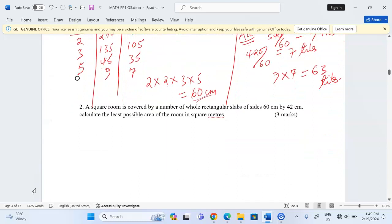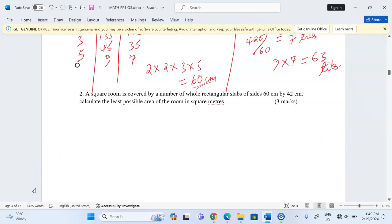In the second question here, we are being told that a square room is covered by a number of rectangular slabs of size 60 centimeters by 42 centimeters. Calculate the least possible area of the room in square meters. Now that we are talking about the least possible area of the room, we should talk about LCM. We are moving from smaller dimensions of the rectangular slab into getting the dimensions of the room.